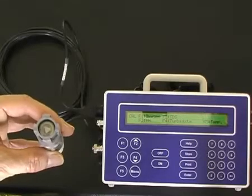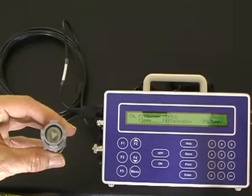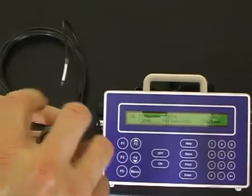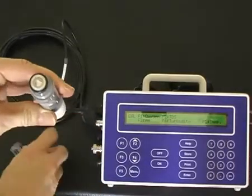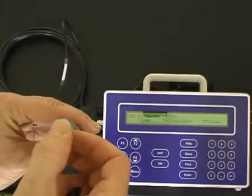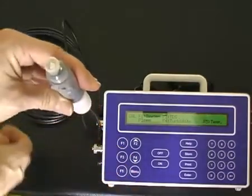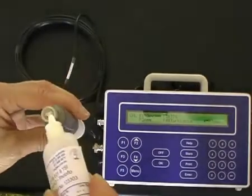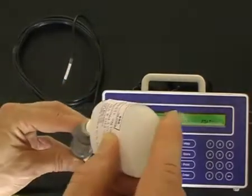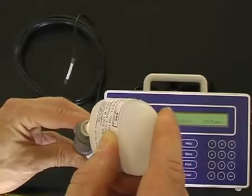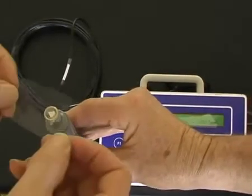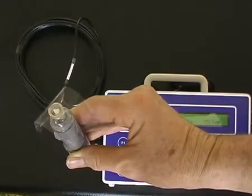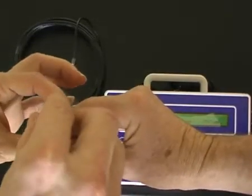The dissolved oxygen sensor must first be prepared for measurement. The guard over the membrane must be removed. The O-ring removed. The Teflon membrane removed. The filling solution must be added to the filling chamber. A membrane fitted over top. Then the O-ring refitted.